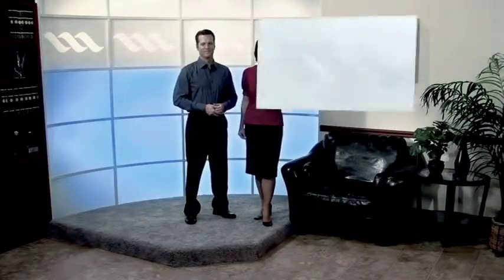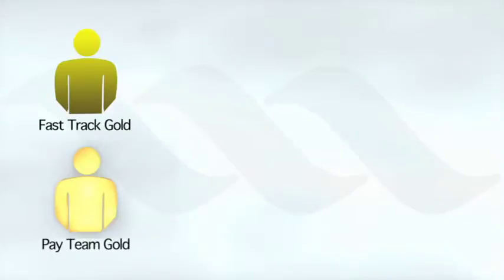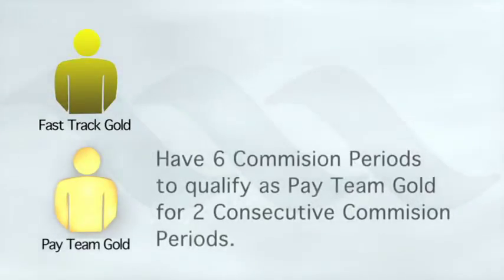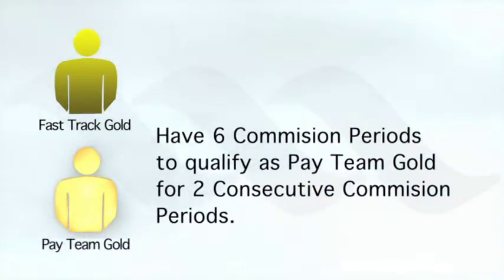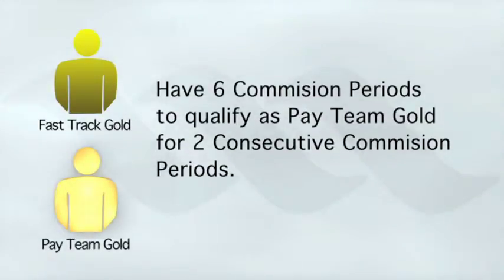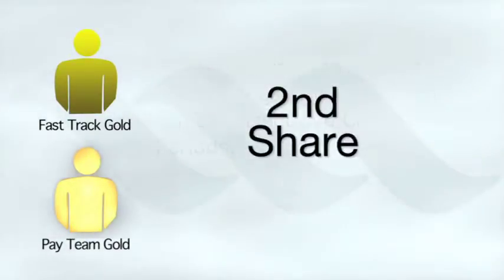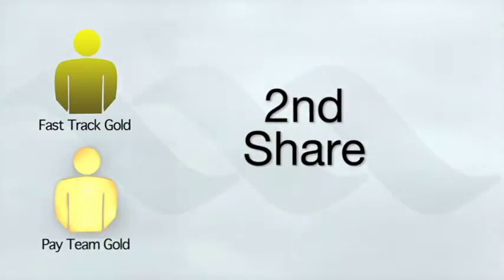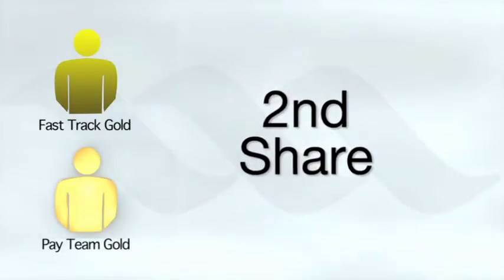1% of the monthly global CV is put into the gold advancement pool for associates who achieve gold for the first time. When associates qualify as gold for the first time, they receive one share in the pool for that month. Fast track or pay team qualified gold associates then have six additional commission periods to qualify as pay team gold for two consecutive commission periods. This allows them to earn a second share from the pool, which will be paid as soon as this qualification is met.